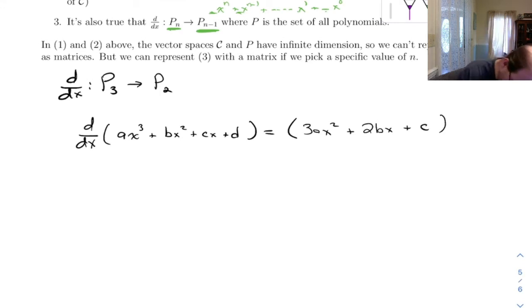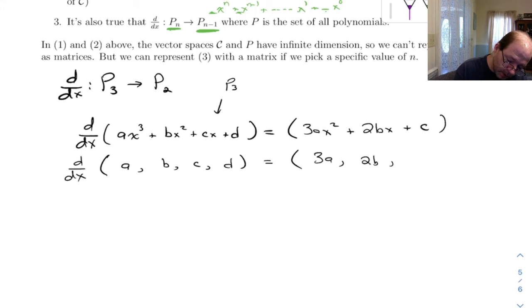If we want to write this using a matrix, first up let's rewrite this. Instead of writing it with something from P₃, let's rewrite it as something from R⁴, it would just be [a, b, c, d]. If we come over here and rewrite this as something from R³, we'd have [3a, 2b, c].